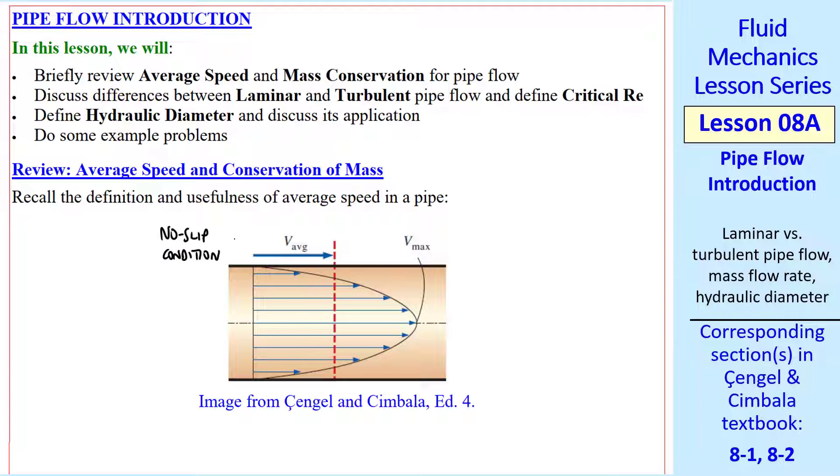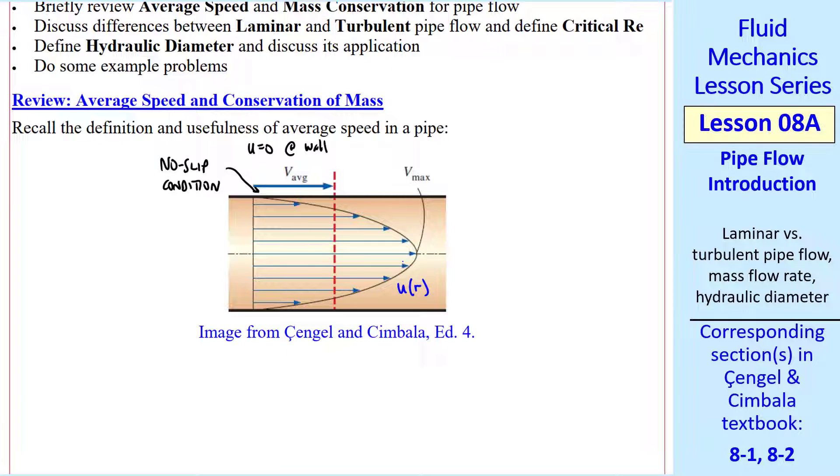First a quick review. Because of the no-slip condition, u equals zero at the wall. This velocity profile shows u of r, where r is the radius from the centerline, and we're talking about a round pipe of diameter d. Because there's a slope del u del y, if y is the distance from the wall, we have a shear stress tau w at the wall. I drew it to the right, meaning that the fluid is trying to drag the pipe to the right. Or if you think about the fluid, the pipe wall is trying to keep the fluid from moving to the right. So tau wall on the fluid would be in the opposite direction.